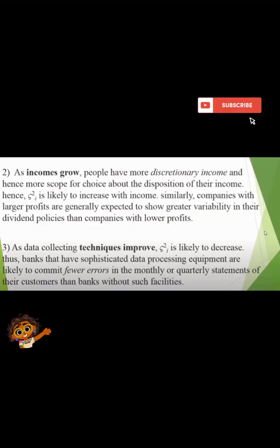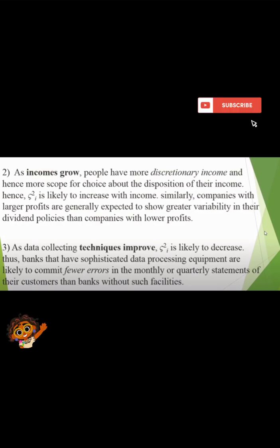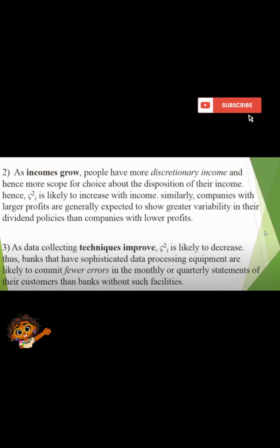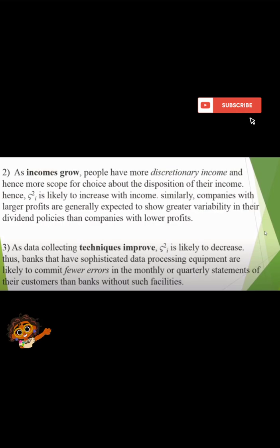The next reason: as income grows, people have more discretionary income and hence more scope for choice about the disposition of their income. Similarly, companies with larger profits are generally expected to show greater variability in their dividend policies than companies with lower profits. Next, as data collecting techniques improve — for example, banks with sophisticated data processing equipment are likely to commit fewer errors in the monthly or quarterly statements of their customers than banks without such facilities.